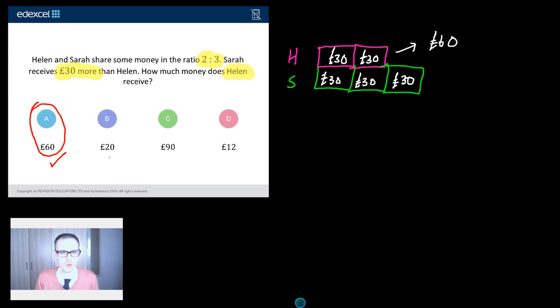So where on earth would 20 pounds come from? How could a student end up with an answer of 20 pounds? Well, I reckon you get this if you read this question dead quickly and read it as Sarah receives 30 pounds. So if Sarah receives 30 pounds, then Helen is going to get 20 pounds and it's going to be split up 20 pounds to 30 pounds. But of course, it doesn't say Sarah receives 30 pounds. Sarah receives 30 pounds more. It's this extra bit there.